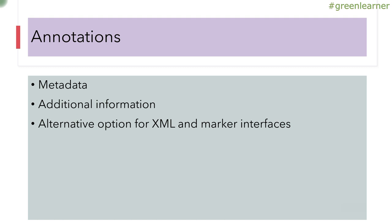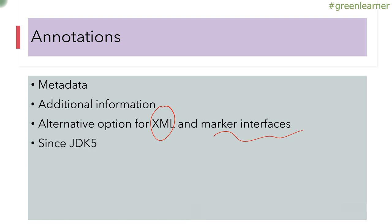Annotations provide additional information — they are an alternative option for XML and marker interfaces. A number of Java-based libraries were using XML, and there was no easy option to pass additional information. So annotations were introduced as an optional alternative to XML — you can use annotations instead of XML and stay within Java only. They are also an alternative to marker interfaces, which are interfaces that don't have any methods but signal the JVM to do something specific about classes implementing them, like the Serializable interface.